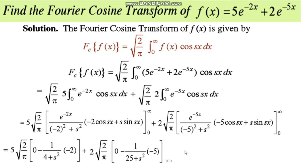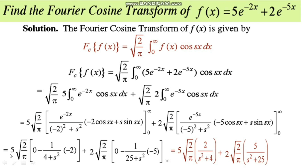After simplification, we get: 5 times root over 2 by pi, times (-1) times (-2), giving 2/(s² + 4), plus 2 times root over 2 by pi, times (-1) times (-5), giving 5/(s² + 25). Hence the required Fourier cosine transform of the function f(x) is: root(2/π) · [10/(s² + 4) + 10/(s² + 25)].